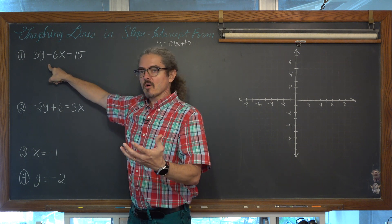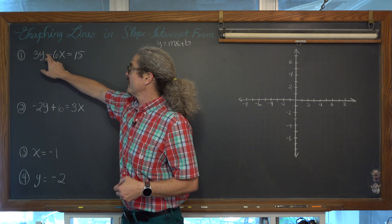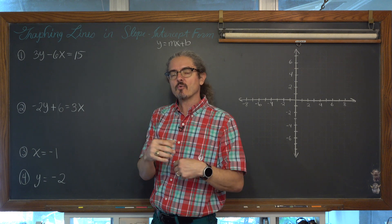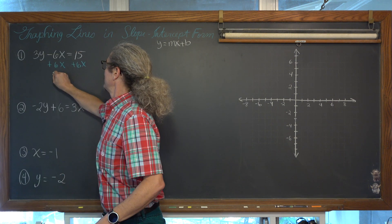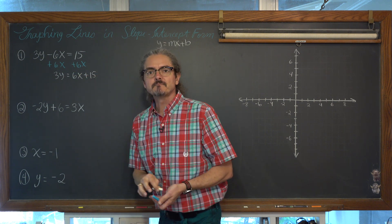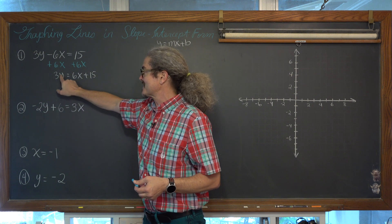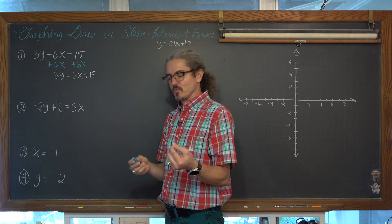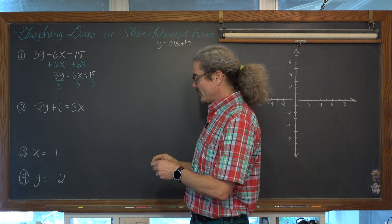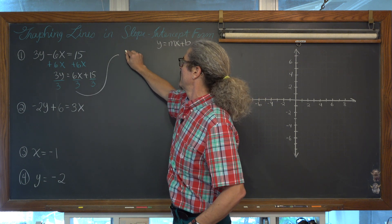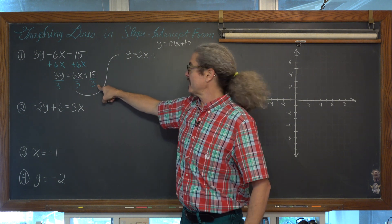For our first example, we need to isolate the variable y. On the left-hand side we have 3 being multiplied by y and a subtraction of 6x. We add 6x to both sides first, giving us 3y is equal to 6x plus 15. Then we divide everything by 3 — each of the three terms by 3. Now we have y is equal to 2x plus 5, since 15 divided by 3 is 5.